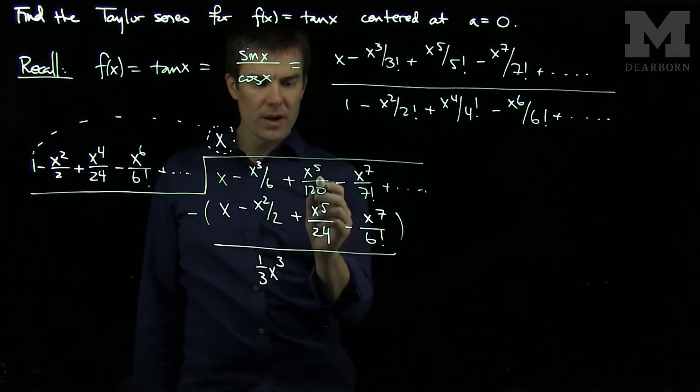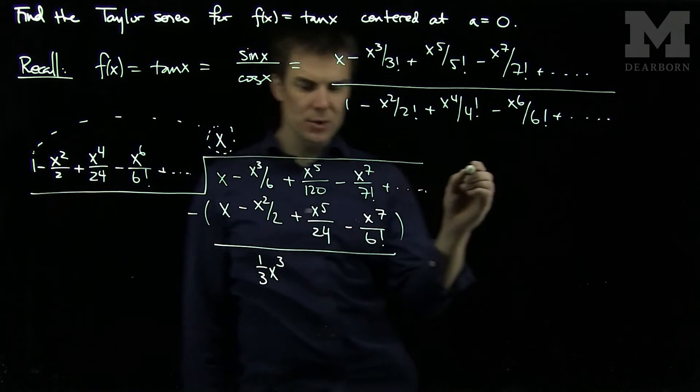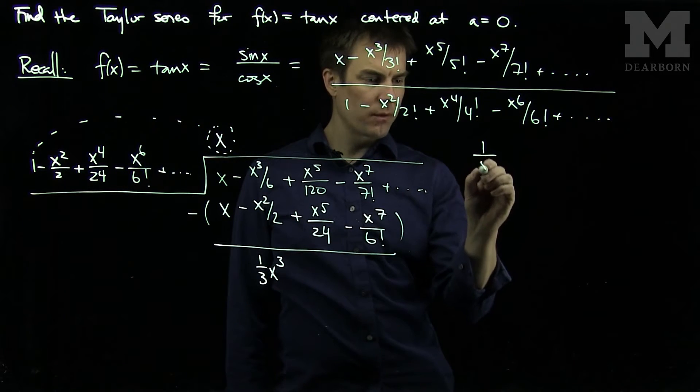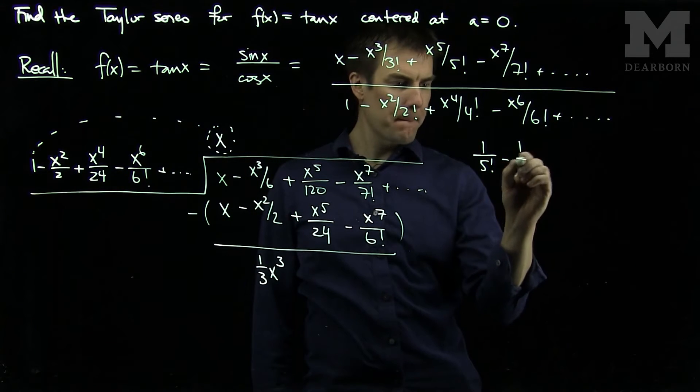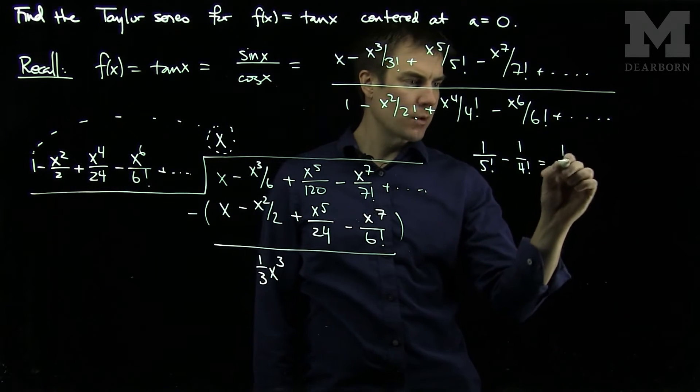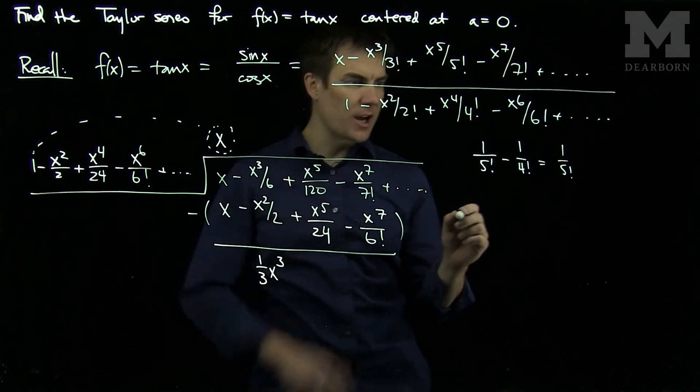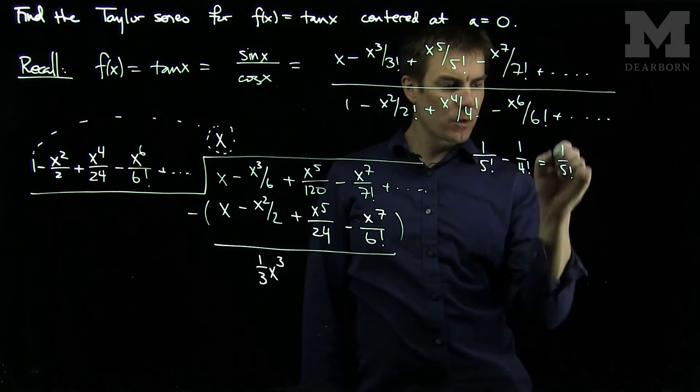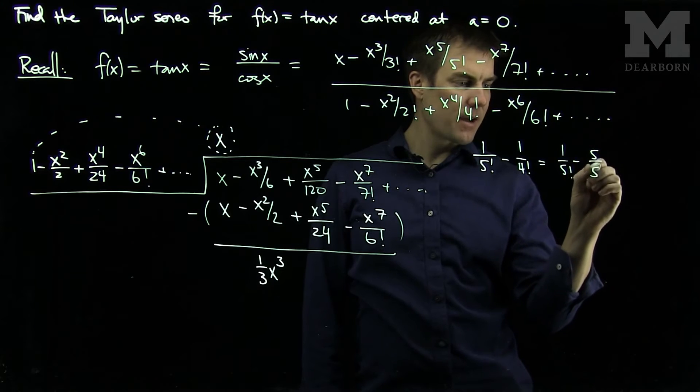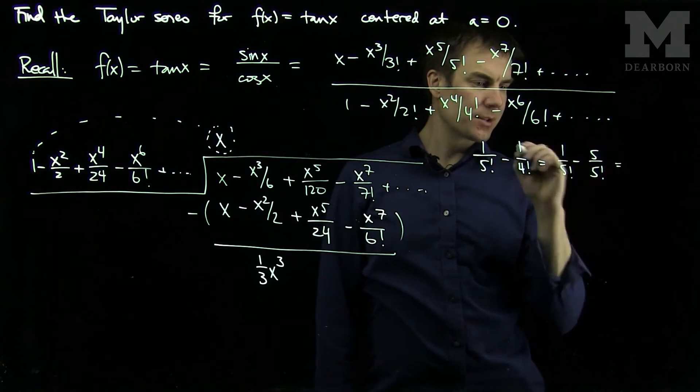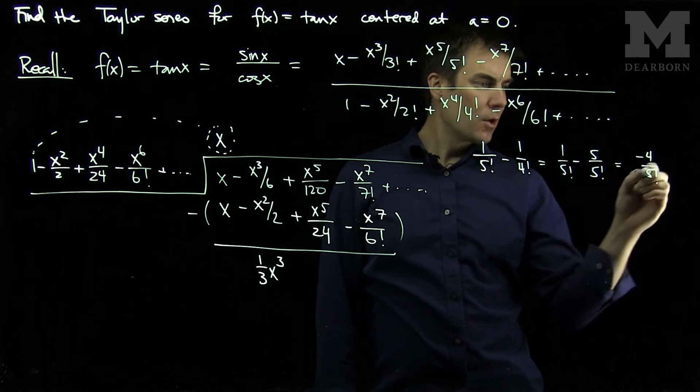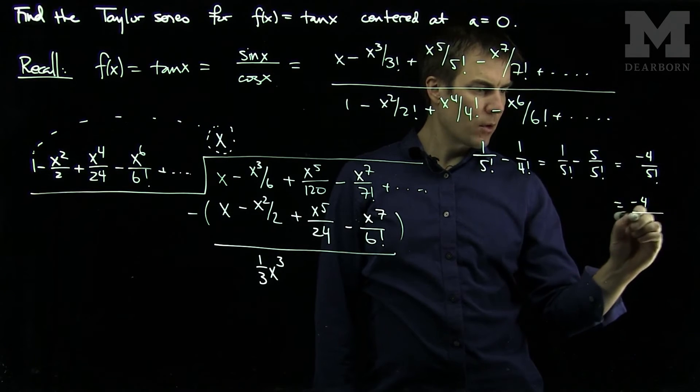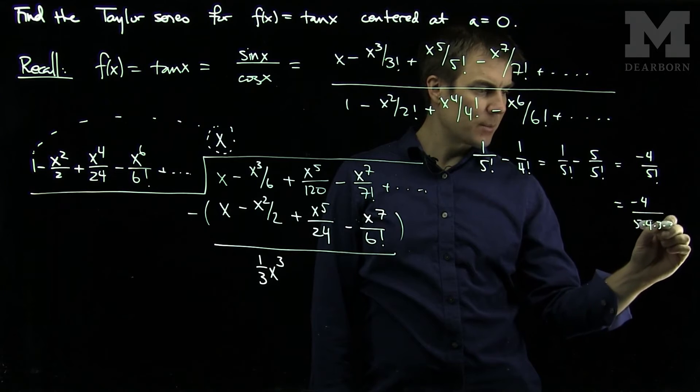And then over here what we have is a positive 1 over 5 factorial minus 1 over 4 factorial. And we can see the general pattern by doing this trick. We have 1 over 5 factorial minus 5 over 5 factorial. So what this is is going to be minus 4 over 5 factorial.